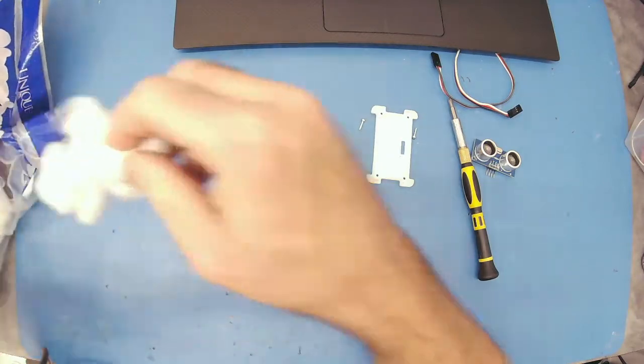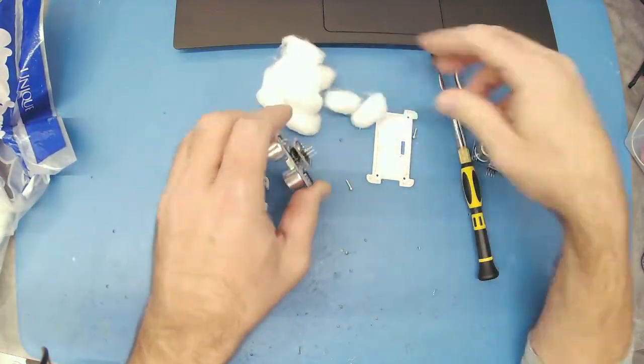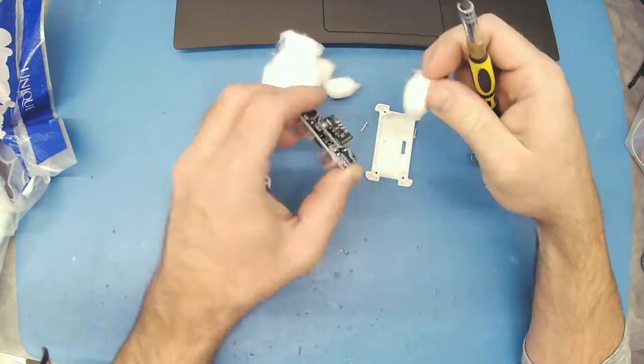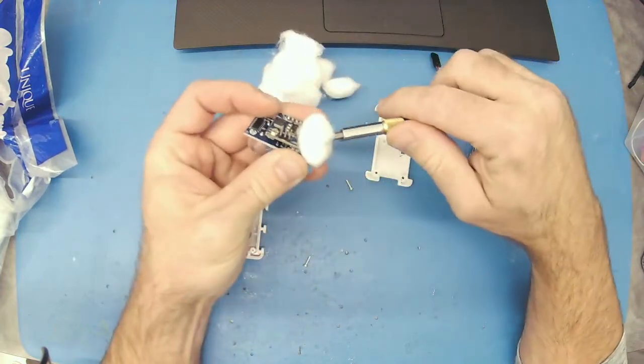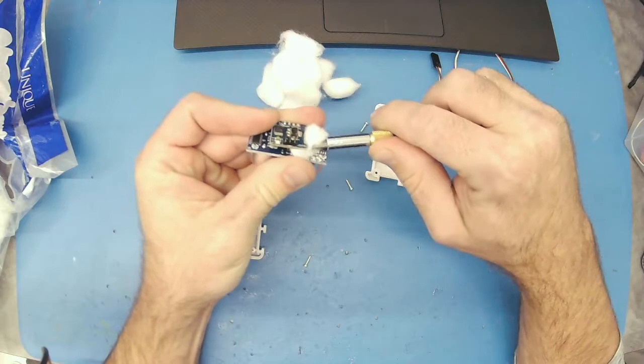So, what I've been doing is taking some cotton balls and a very small screwdriver. The first thing I do is I tuck some cotton balls in between the two circuit boards here.